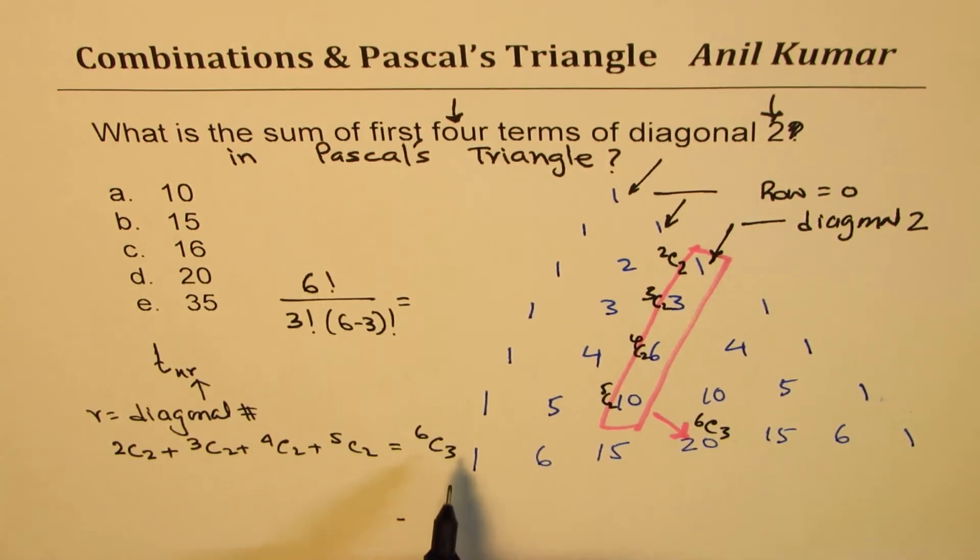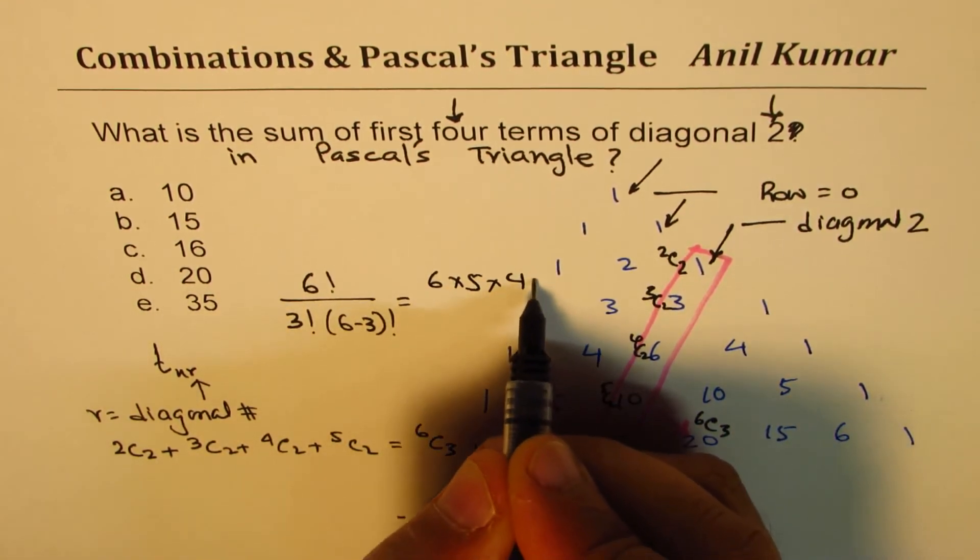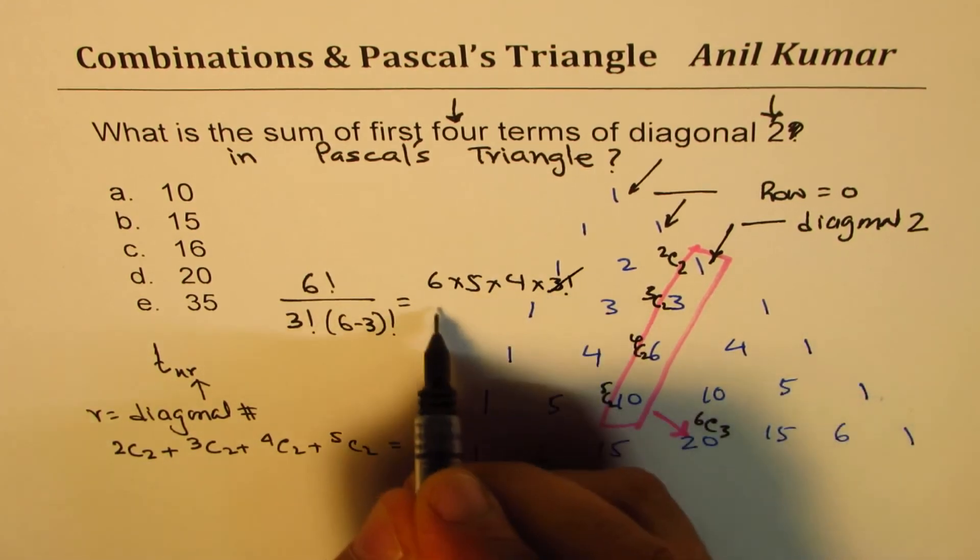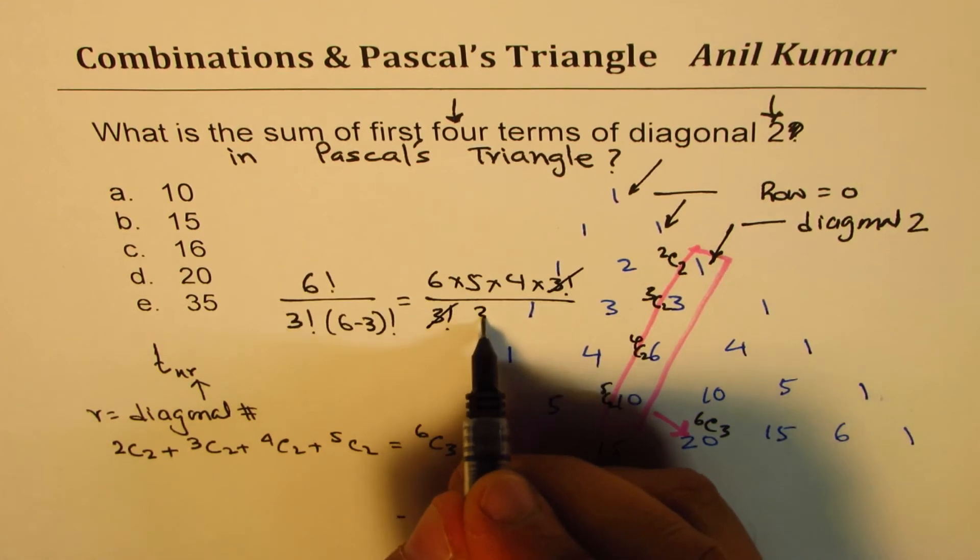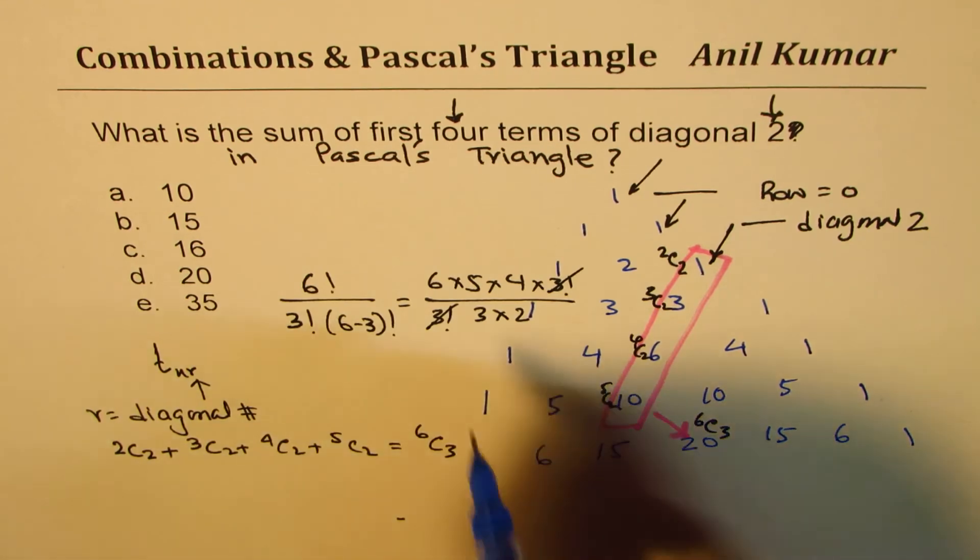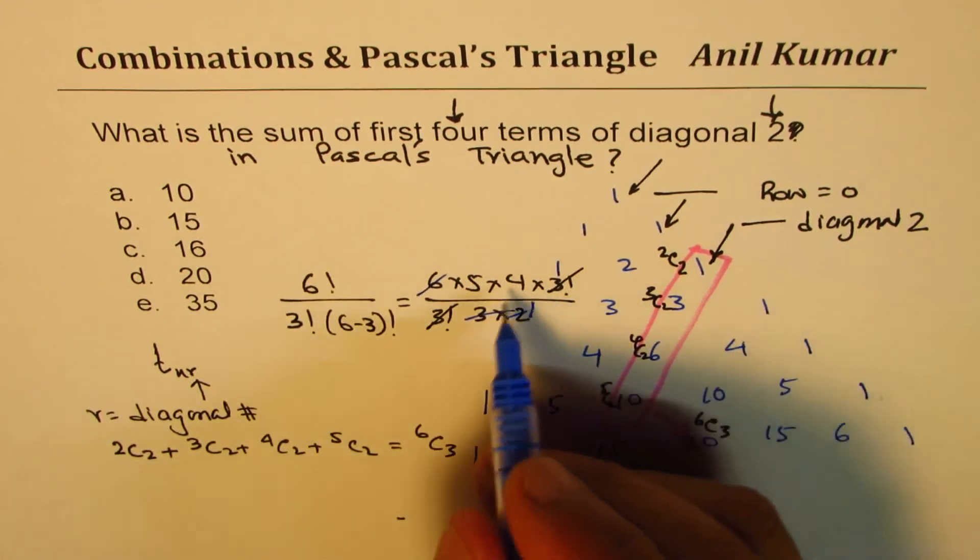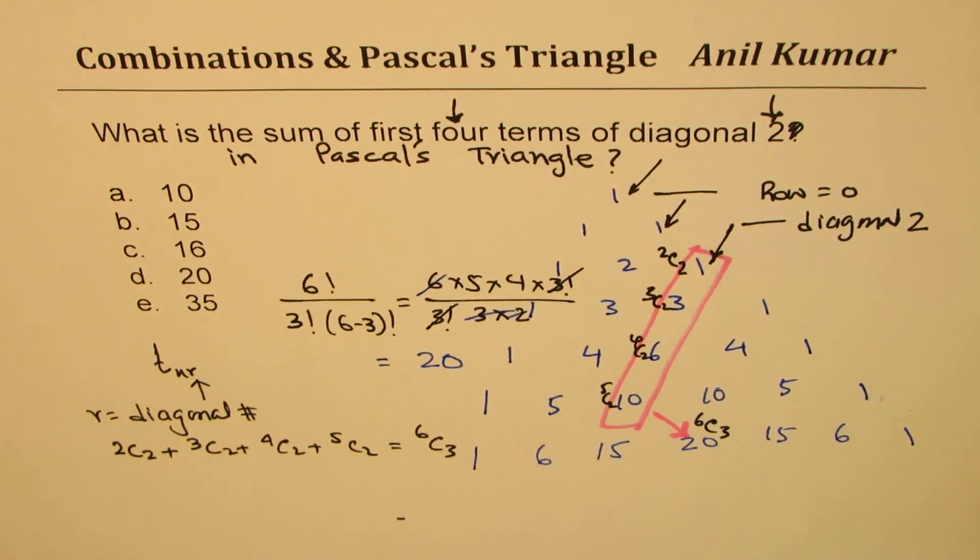6 factorial over 3 factorial: 6 times 5 times 4 times 3 factorial - it cancels, right, with 3 factorial. Then again we have 3 factorial, let me write 3 times 2. Perfect. Easy to calculate: 3 times 2, 6 cancels, so you are left with 5 times 4 as 20.